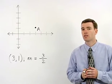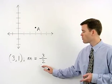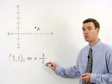we need two points, and that's where our slope comes in. Remember that slope means rise over run.